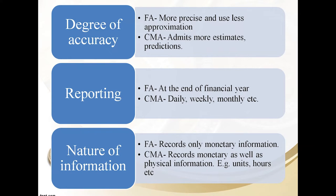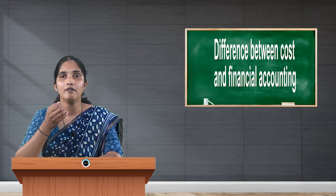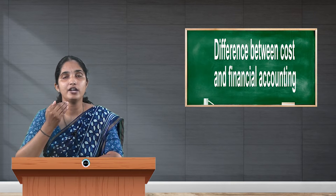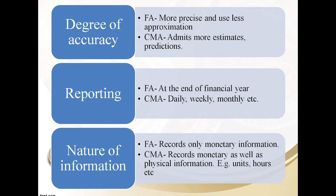The next difference is degree of accuracy. Financial accounting gives you information based on past events — what has been done is presented accurately. Whereas the degree of accuracy in cost and management accounting is less, because it always forecasts the future.